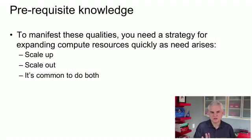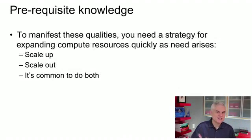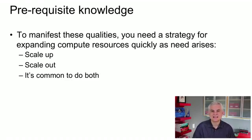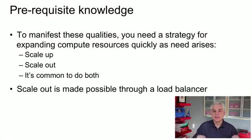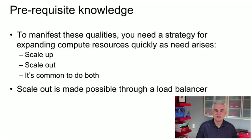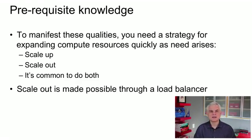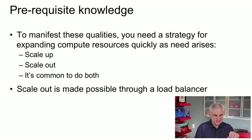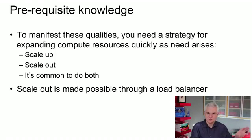These two ideas are not mutually exclusive — it's common to both scale up and scale out for any given system, purchasing more computers each with more memory and a better processor. Scale out is made possible through a network component called a load balancer, where the number of incoming requests is balanced between two or more servers. One of the most common methods is round robin: with five servers, the first request goes to server one, the second to server two, and so on, then back to server one.